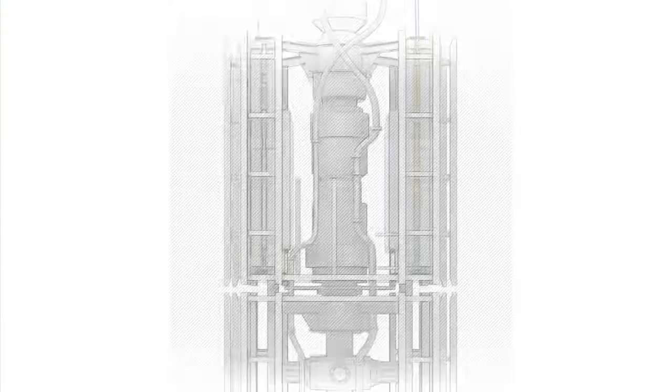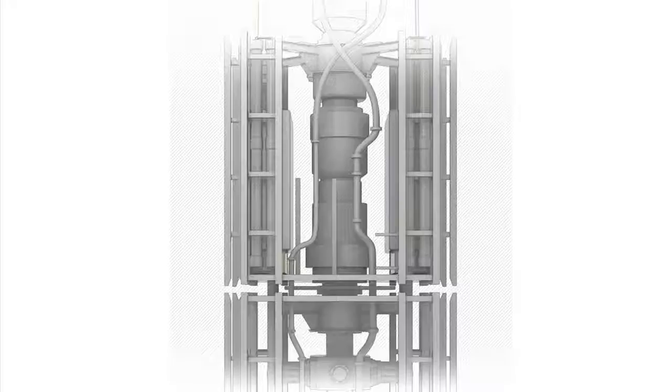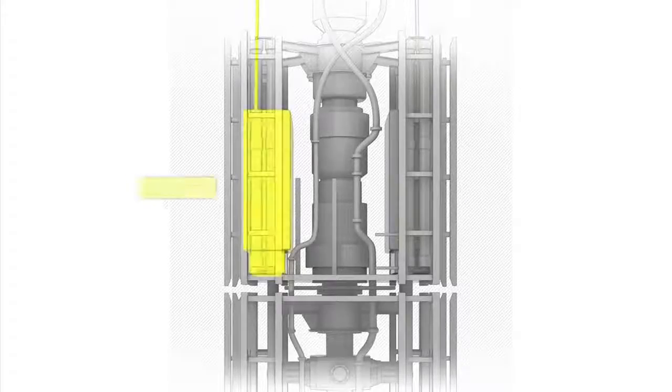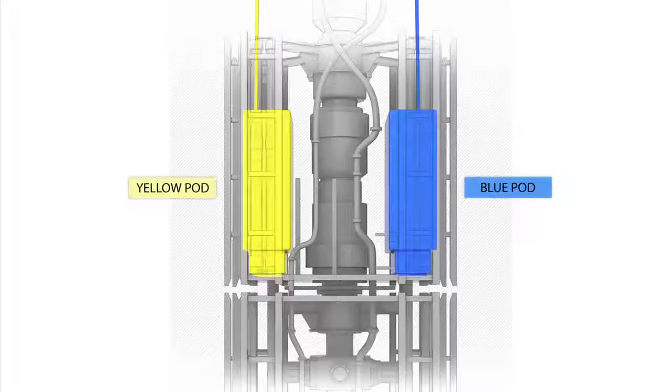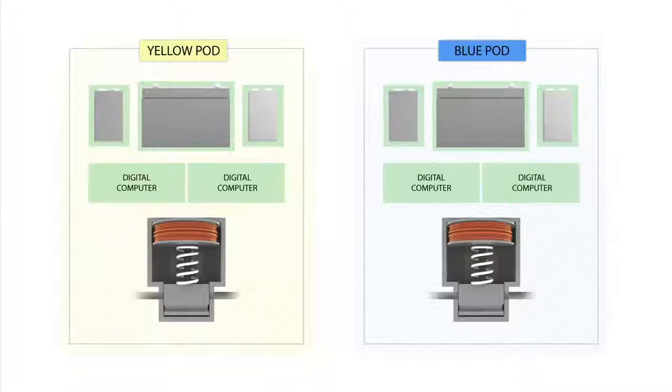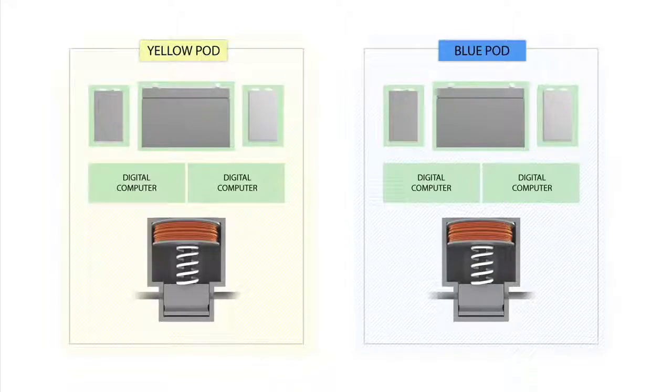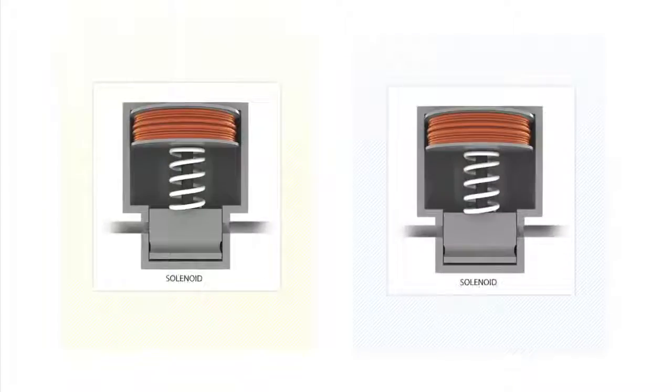The AMF Deadman system was operated by two redundant control systems on the BOP, known as the Yellow Pod and the Blue Pod. The redundancy is supposed to increase the reliability of the system in an emergency situation. The Yellow and Blue Pods worked independently of each other and were comprised of identical enclosed computer systems and sets of solenoid valves.